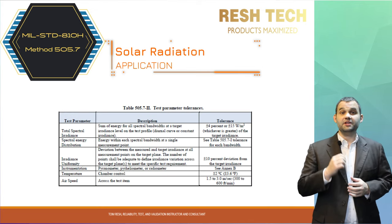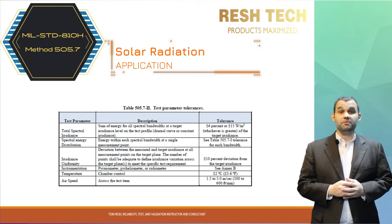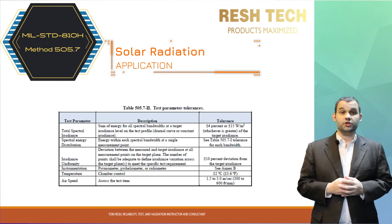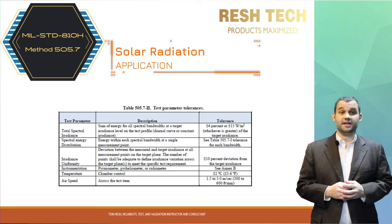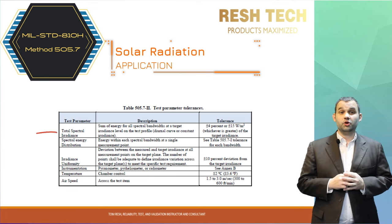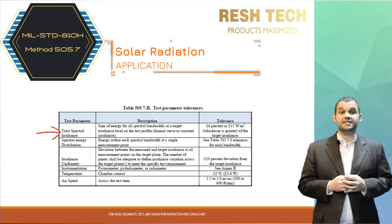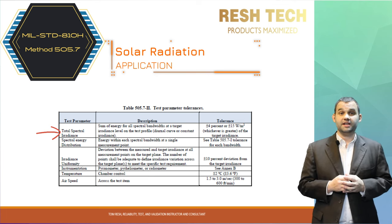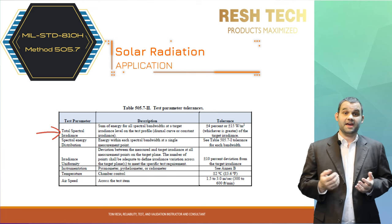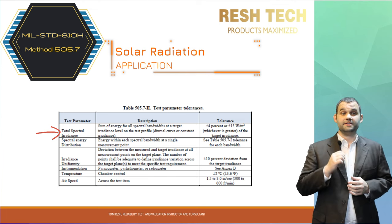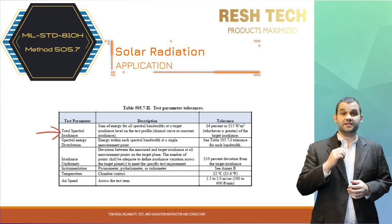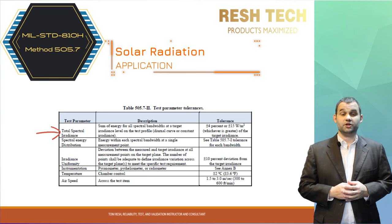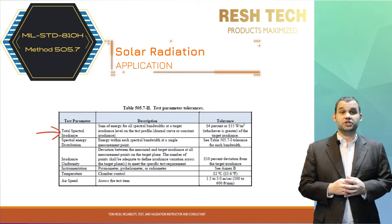Method 505.7 for solar radiation has its own specific test tolerance table and definitions for each test parameter. Pictured is Table 505.7-2, which covers test tolerances and definitions. For instance, total spectral irradiance — defined as the sum of energy for all spectral bandwidths at a target irradiance level on the test profile — has a test tolerance of ±4% or ±15 W/m².